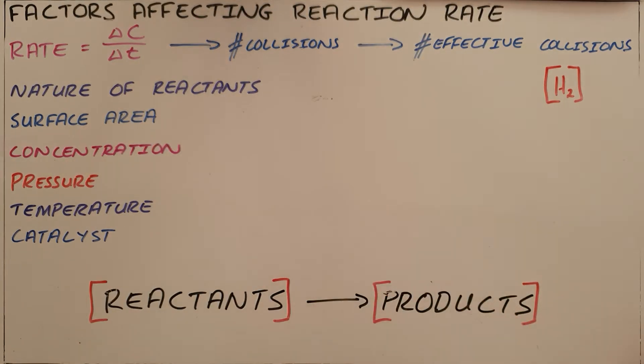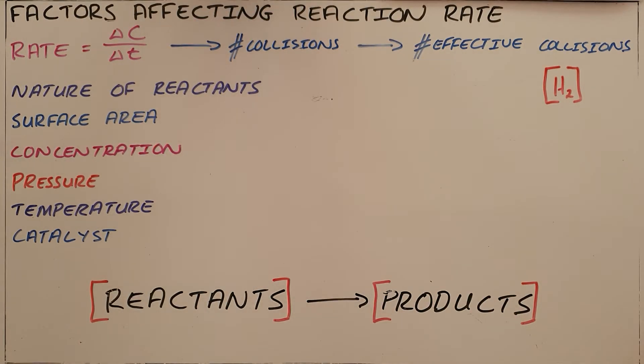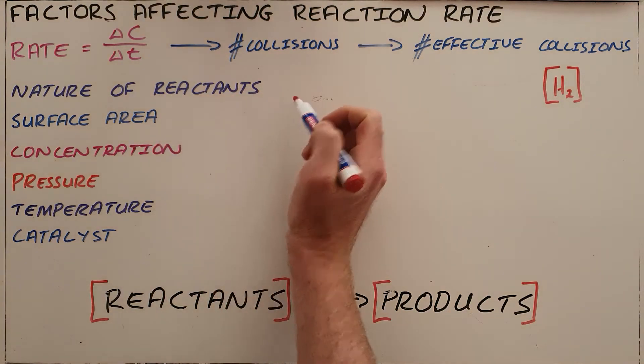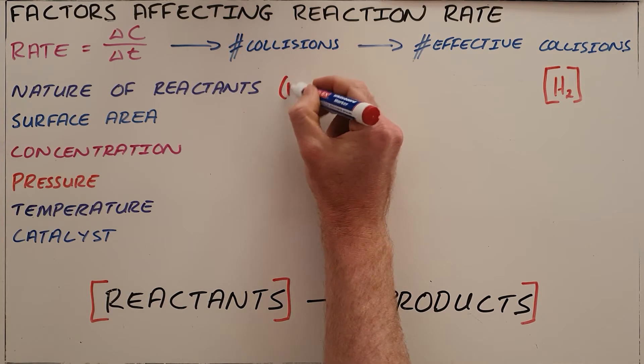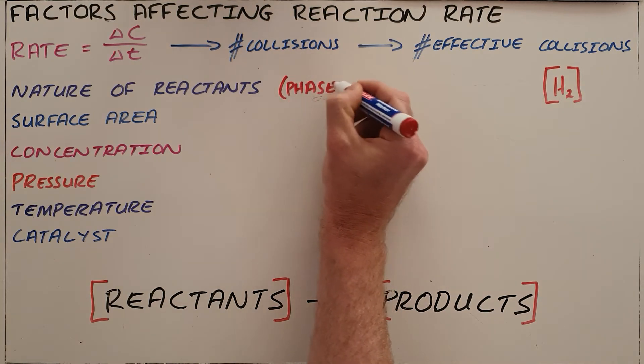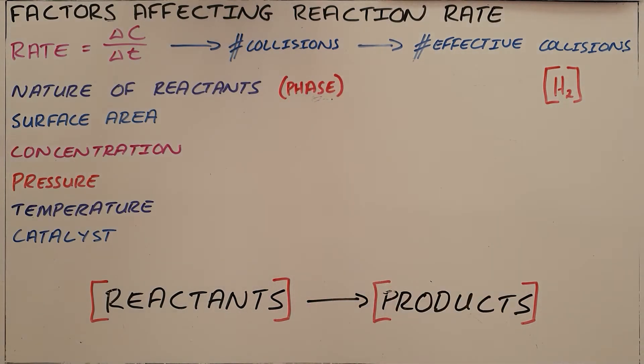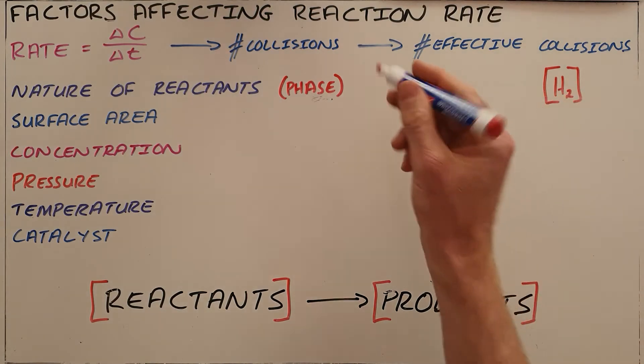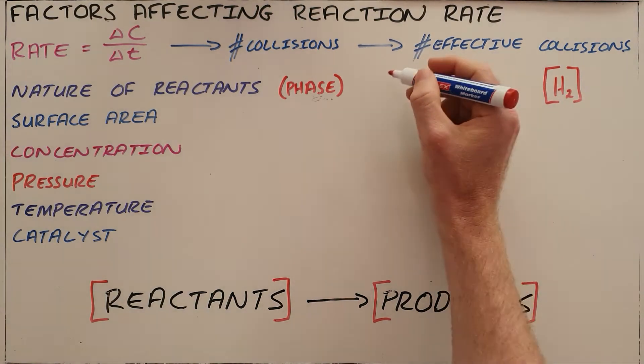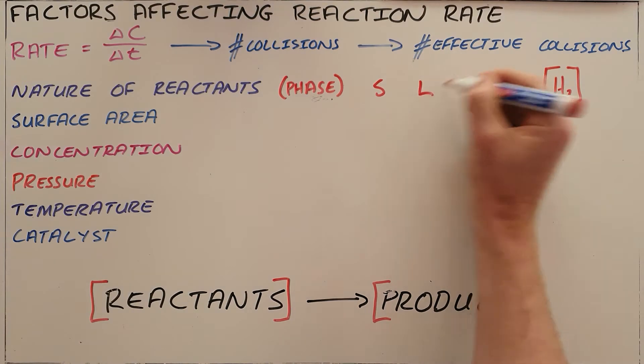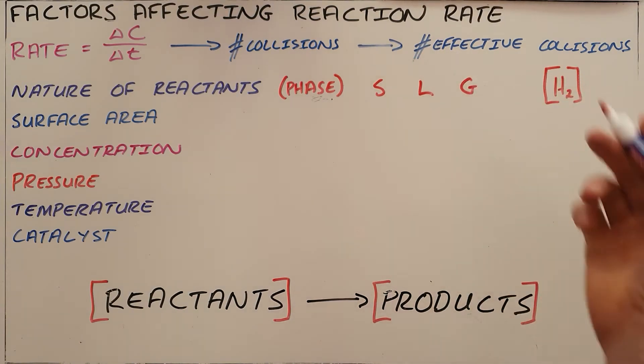The first factor that affects the rate of reaction is the nature of reactants. That basically just means the phase that those reactants are in. We remember from the particle model of matter that the phase can either be solid, liquid, or gas. We know that there are other phases, but these are the ones we will be dealing with.